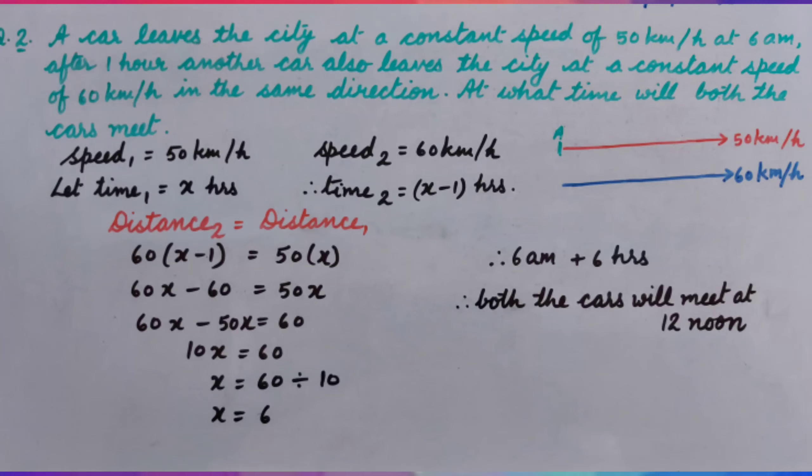So, speed of first car is 50 km per hour. Speed of second car is 60 km per hour. These cars travel in the same direction and meet at a point, but we don't know at what time they meet.